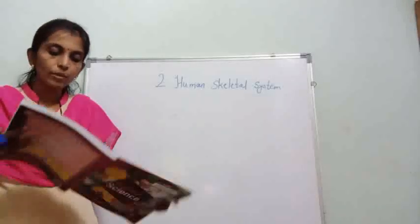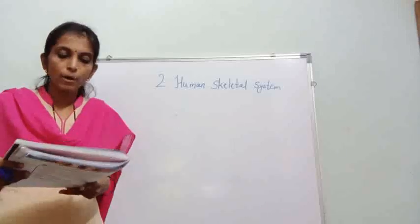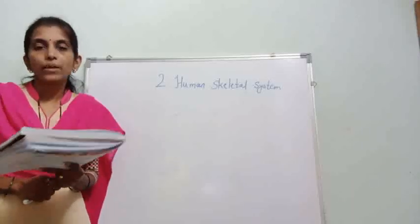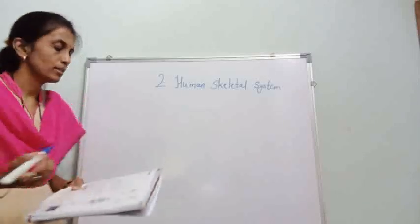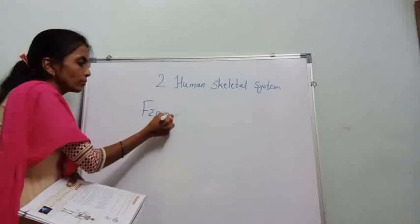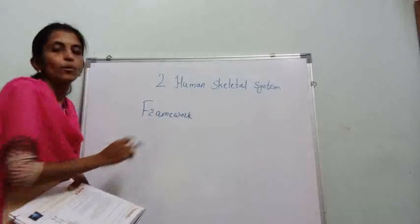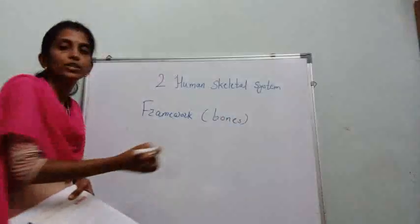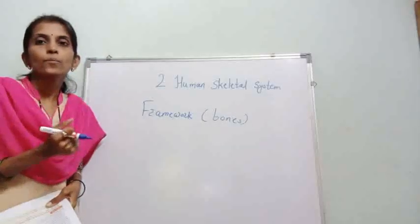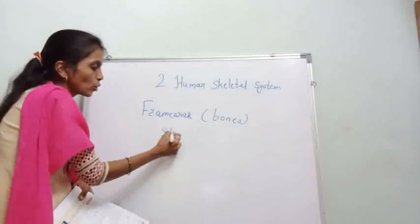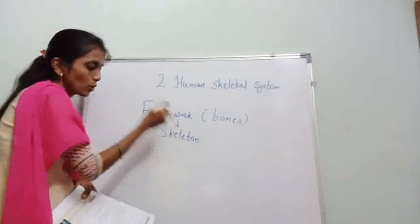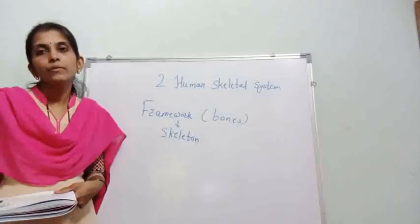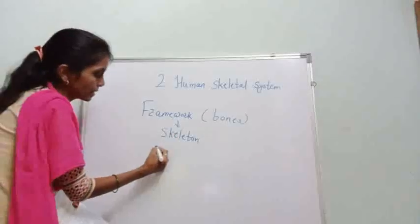All the bones in the human body form a framework called the skeletal system. When bones are joined to each other, the framework is formed and that is called a skeleton. So, can you tell how many bones are in our body? Yes, 206 bones.